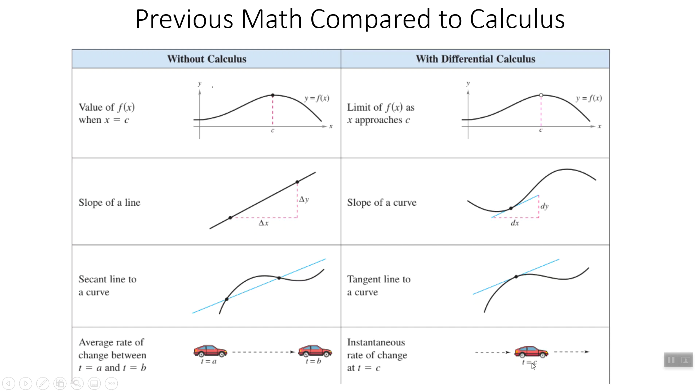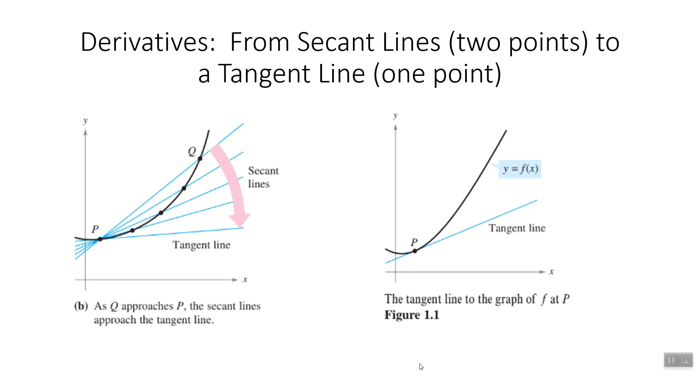In calculus, we can find the rate of change exactly at a particular moment. The process is we take the secant line and make it closer and closer to the point where we want the tangent line. A tangent line touches the curve at just one point in that area.